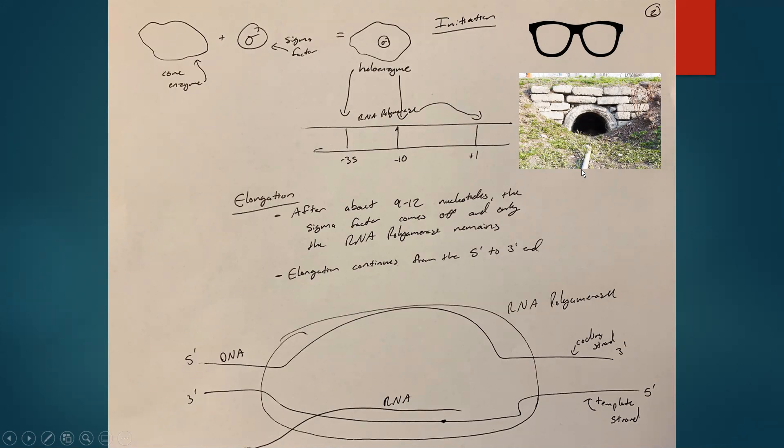The rope is sticking out of the tunnel, so it helps him get into the tunnel. Once he gets into the tunnel, much like the sigma factor, he can take his glasses off because it's dark. The RNA polymerase doesn't need the sigma factor anymore to keep transcribing. Like the man taking his glasses off, the sigma factor disassociates after about 9 to 12 nucleotides because the RNA polymerase doesn't need it and the sigma factor is going to get in the way.